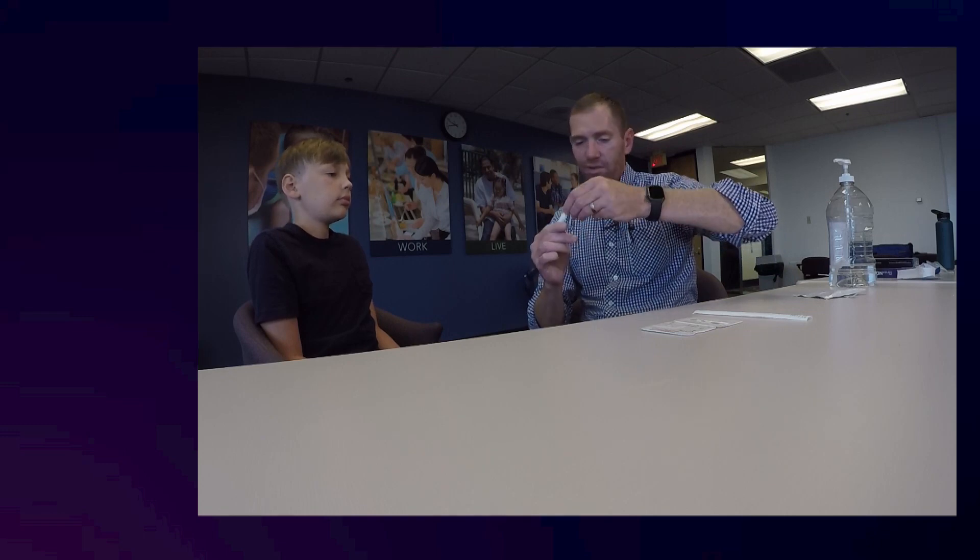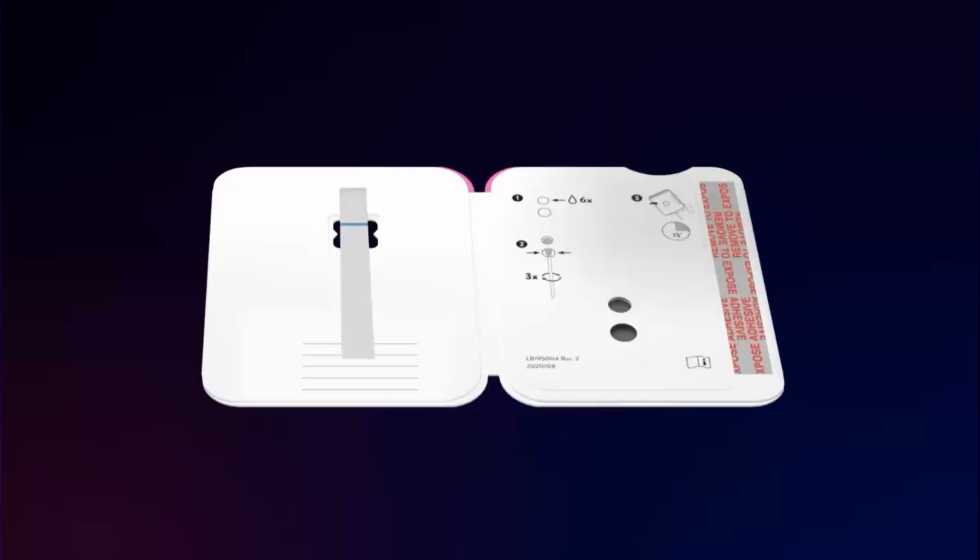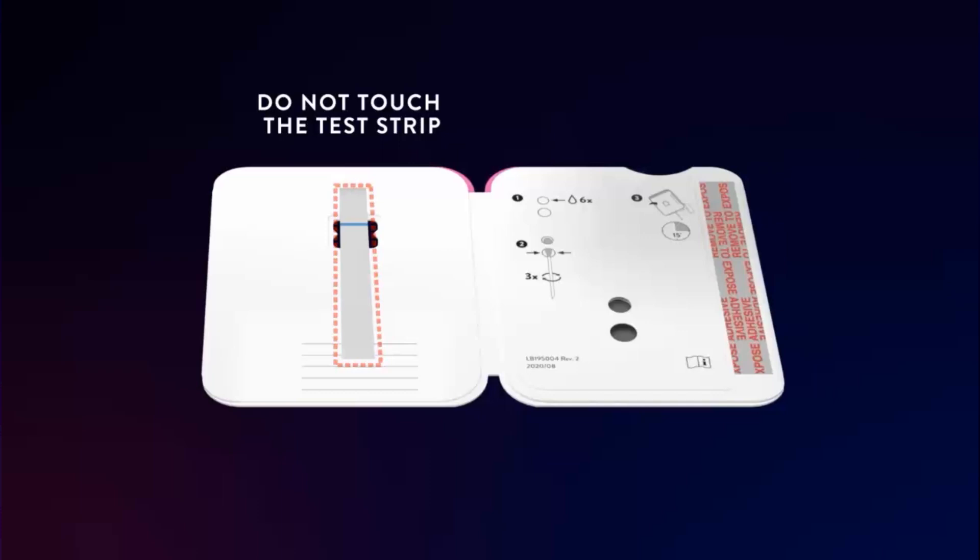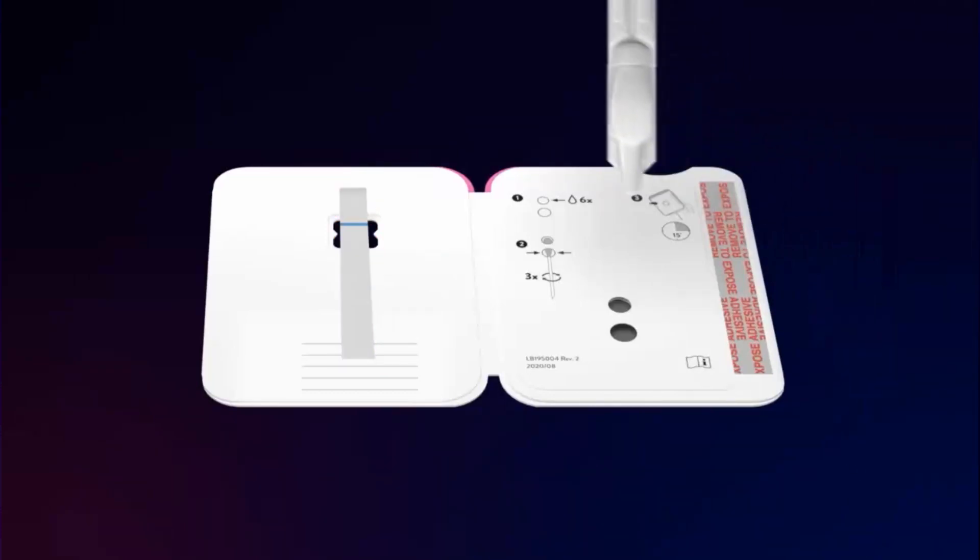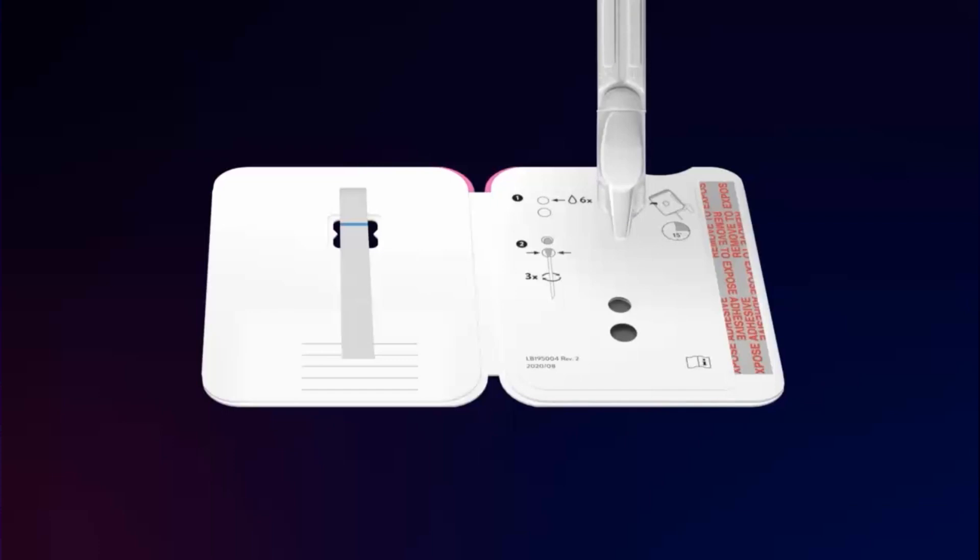This is the developing solution, so we're just going to twist the cap off. There are two holes here on the card. We're going to put six drops of solution into the top hole, and once you've put the solution in the top hole, the test is ready to go.